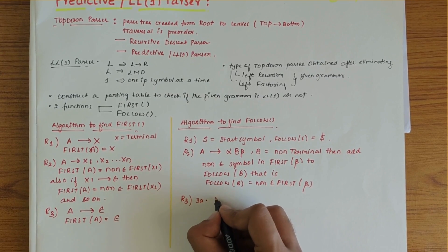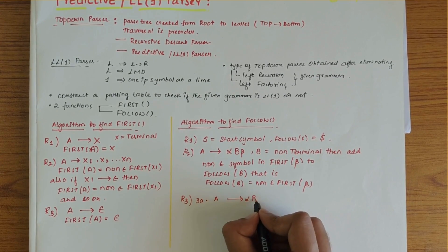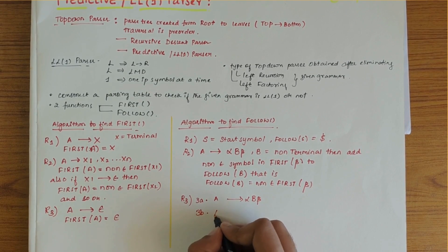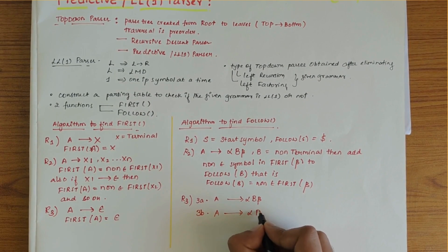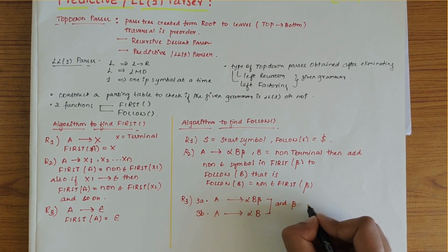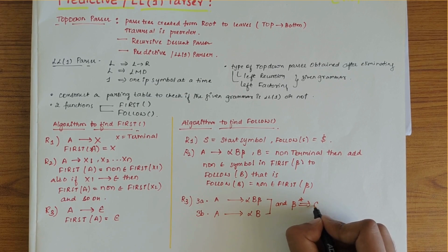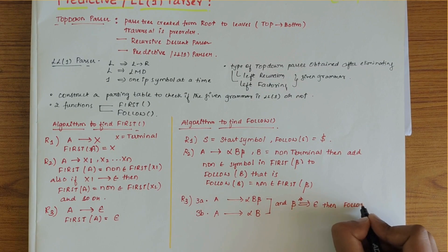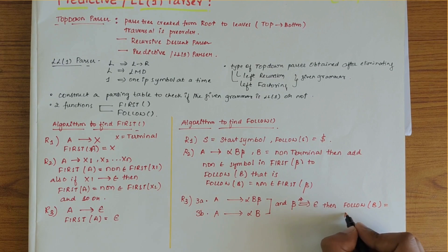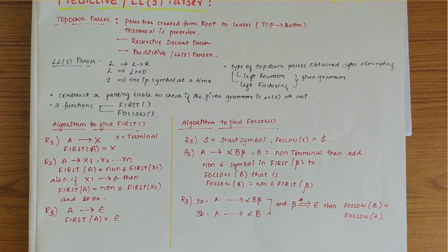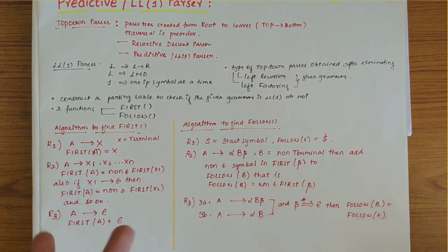Rule three has two parts. Rule 3a states that if the production is of the form A derives alpha B beta. Rule 3b states that if the production is of the form A derives alpha B, and beta derives epsilon, then FOLLOW of B is equal to FOLLOW of A. This algorithm could be asked in an exam, and is important for our understanding.